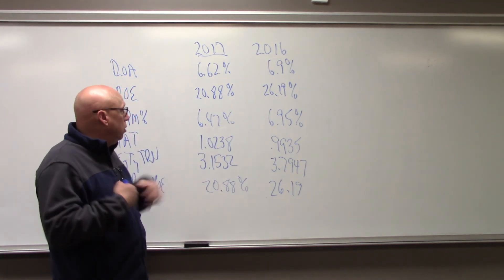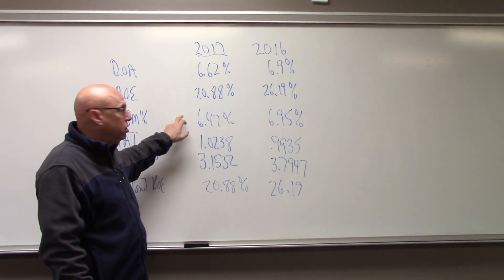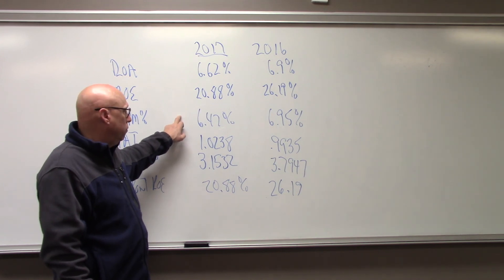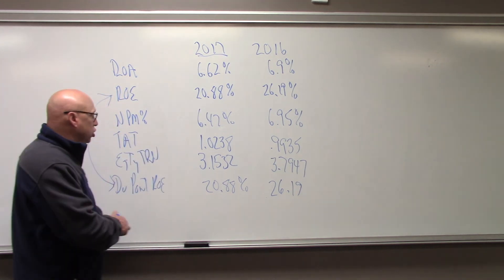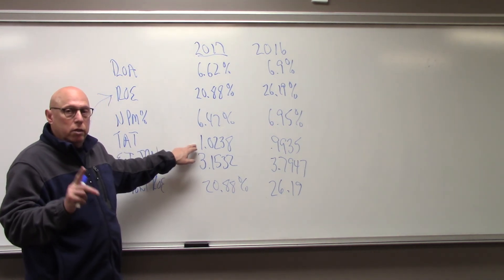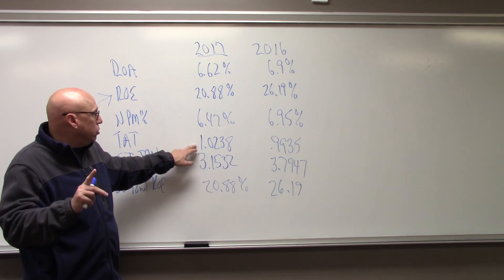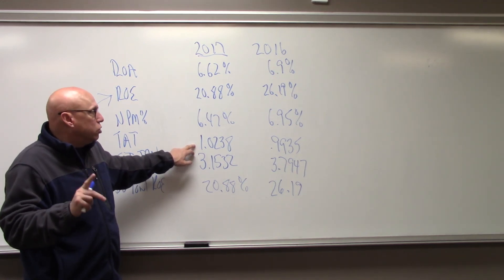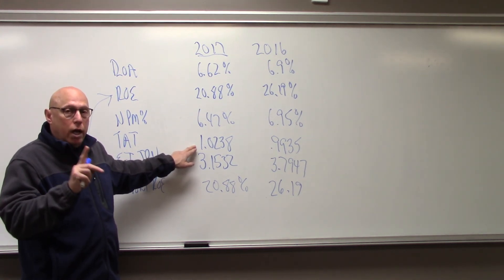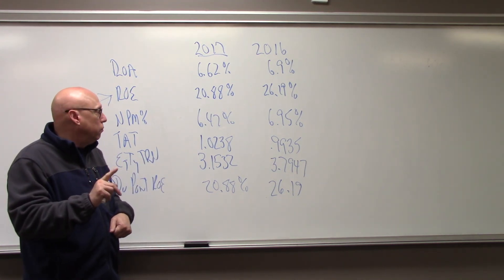As an analyst, as an investor, I want to know what's going on here. It could be a change in mix. Maybe their asset turnover went up, not because they sold property plant equipment, but because they grew their sales. How did they grow their sales? They might have grown their sales by selling more low-margin items. Maybe they introduced a new product that has a lower margin.